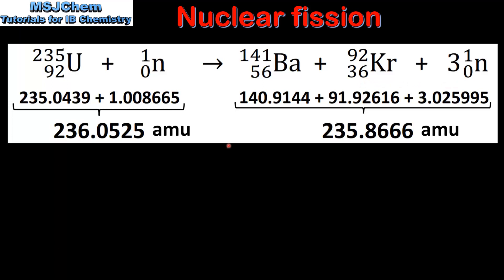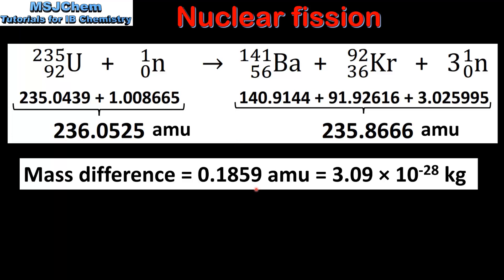Like our previous example, if we look at the masses of the reactants and the products, we can see that the mass of the products is less than the reactants. Here we have the mass difference between the reactants and the products, which has then been converted to kilograms.